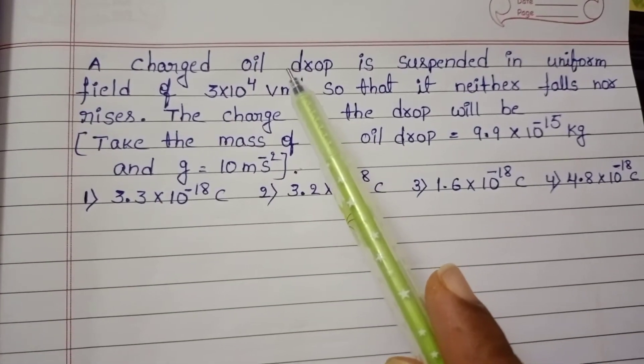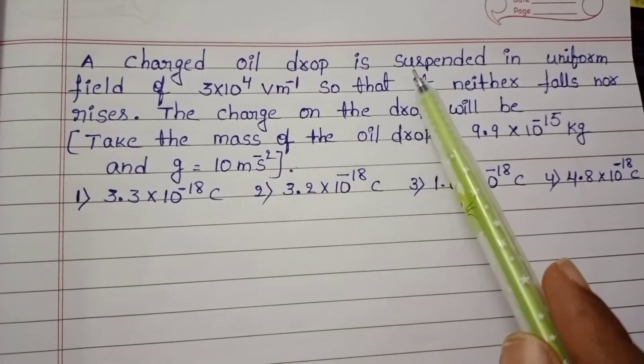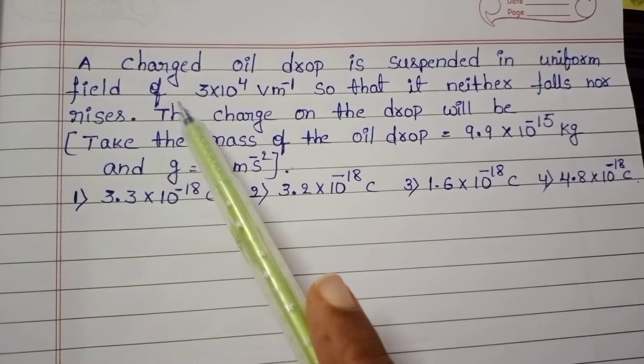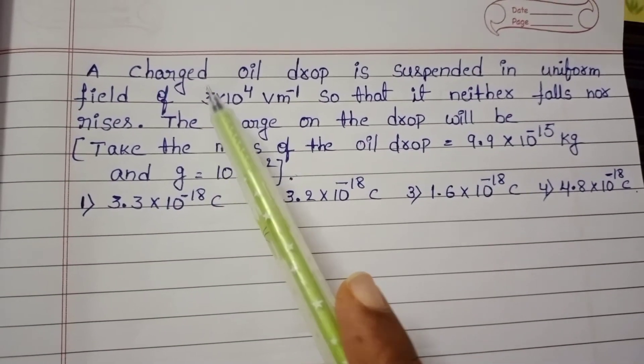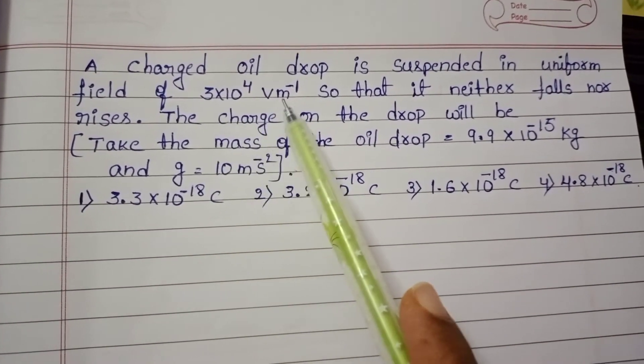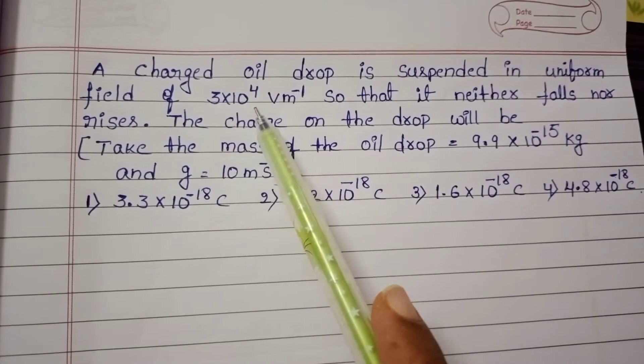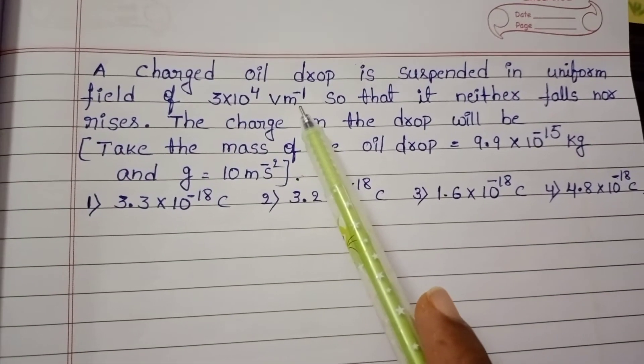here when an oil drop is suspended through the uniform field, this uniform field is external field. Field intensity is 3 into 10 power 4 volt per meter.